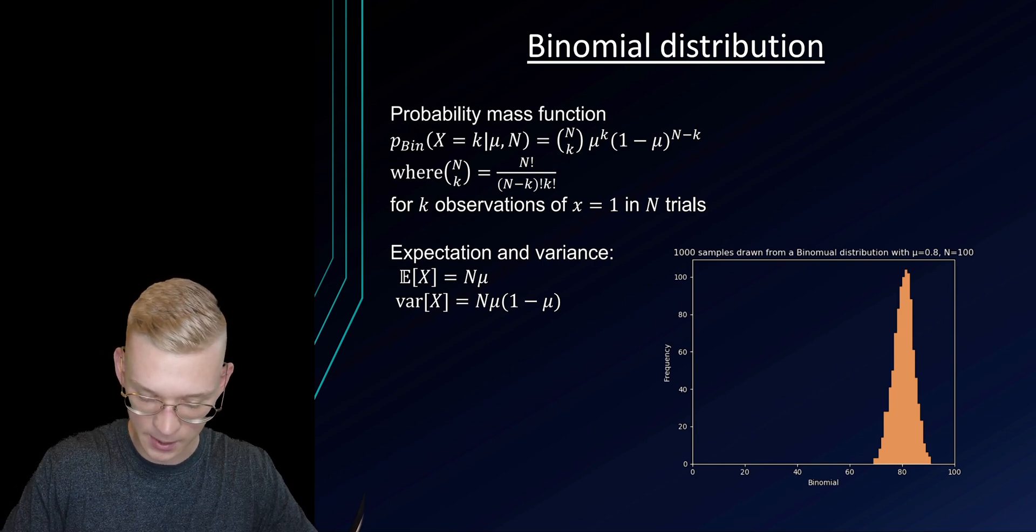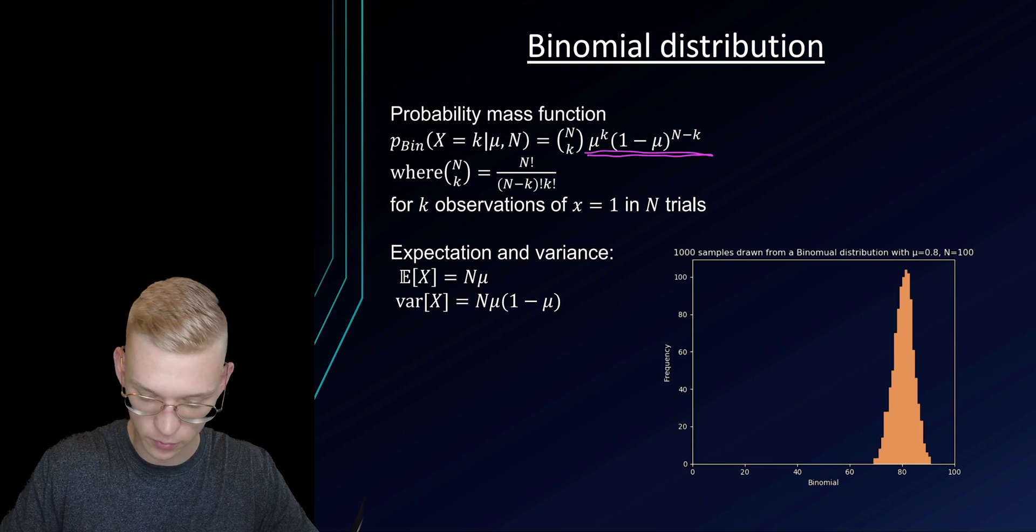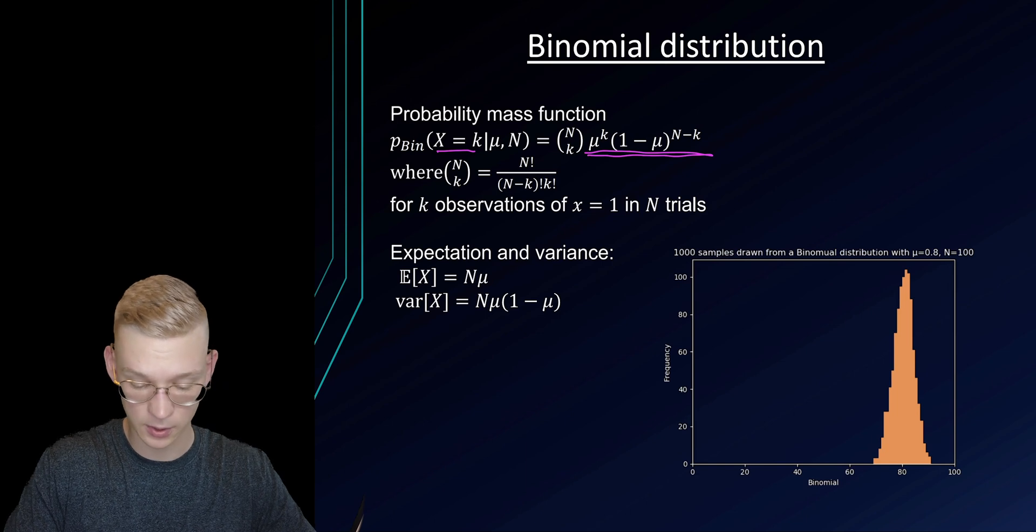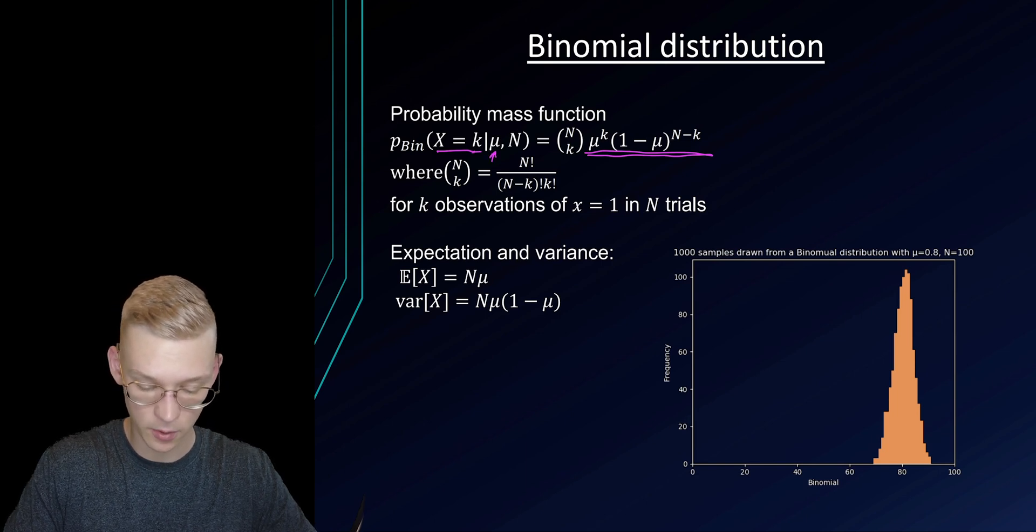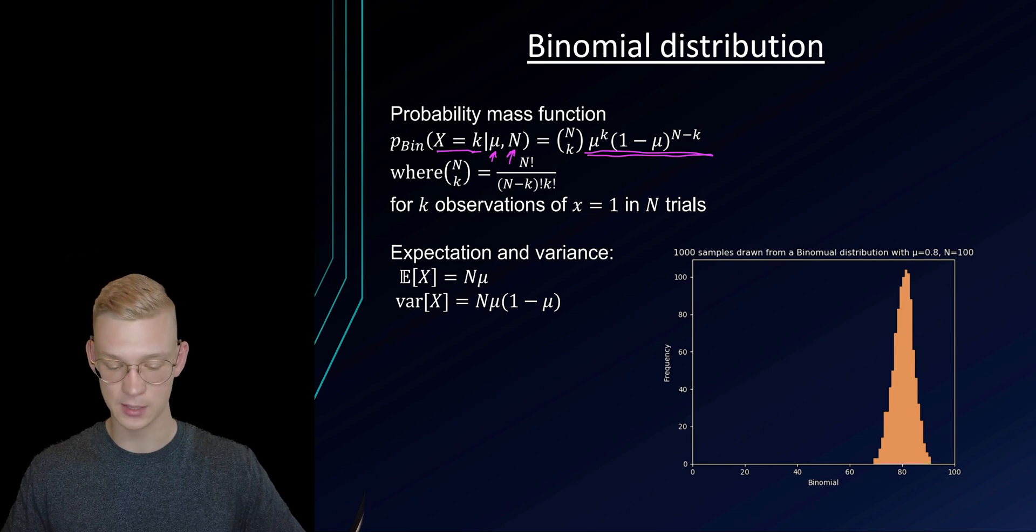So we see the exact same term that we had before, this one right here. But now we have not only the probability of a result given k, but we also have the mu and the number of how many times we performed this experiment.